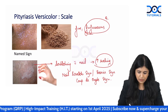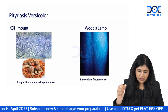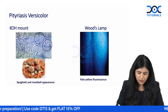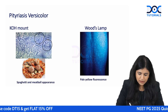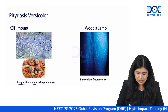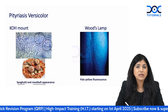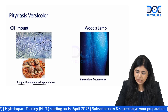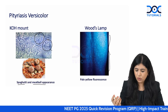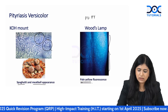On KOH examination of the scale, you will see the fungus existing as both yeast and hyphae. The hyphae look like spaghetti and the yeast look like meatballs, so this appearance is called the 'spaghetti and meatball appearance,' also called the 'banana and grape appearance.' On Wood's lamp examination, pityriasis versicolor lesions typically exhibit a pale yellow fluorescence — remember: PV shows pale yellow.